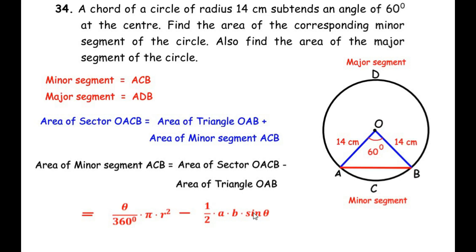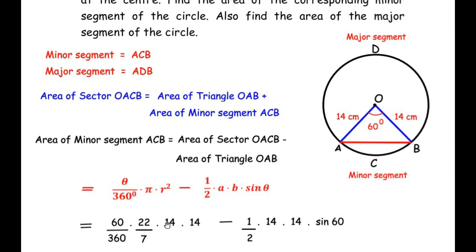Substituting the values: (60/360) × (22/7) × 14 × 14, minus ½ × 14 × 14 × sin 60°. We simplify the fractions: 60 and 360 give 1/6; 7 and 14 divide to give 1 and 2. On the triangle side, 2 and 14 divide to give 1 and 7. The value of sin 60° is the standard angle value √3/2.